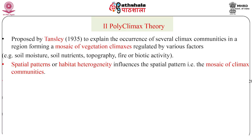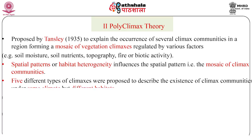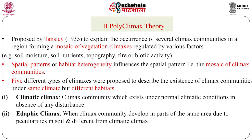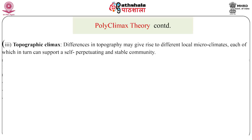To describe the existence of climax communities under different habitats, Tansley recognized five different types of climaxes, some primary and others secondary. The climatic climax is the community that exists under normal climatic conditions in the absence of any form of disturbance. Edaphic climax: stable and self-perpetuating communities that develop due to peculiarities in soil — variation in edaphic factors — and are different from climatic climax. Topographic climax: differences in topography may give rise to different local microclimates, each supporting a self-perpetuating community, described as topographic climax.